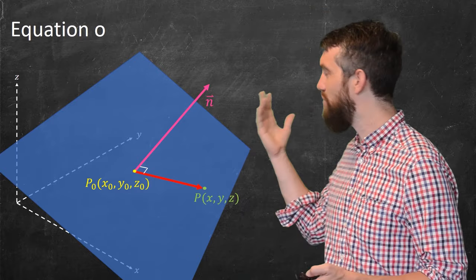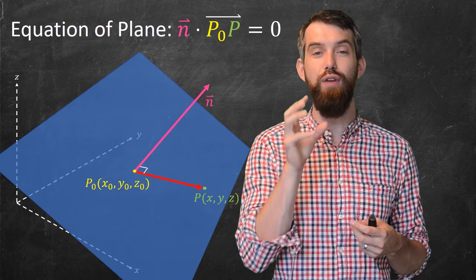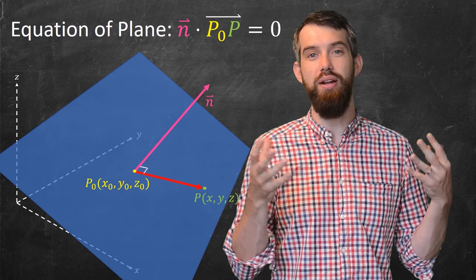So I have the following constraint. It's that this normal vector dotted with the vector that goes from P₀ out to P, that that has to be orthogonal, a.k.a. the dot product is zero.